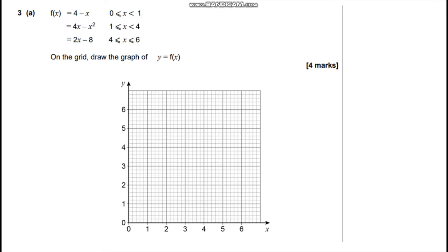So we've got a function f(x) and we're saying that f(x) equals 4 minus x between 0 and 1, it equals 4x minus x squared for x values between 1 and 4, and 2x take away 8 for x values between 4 and 6. So it's telling you that y equals f(x), so we can just ignore this and just say y equals.